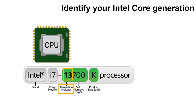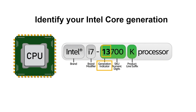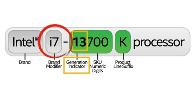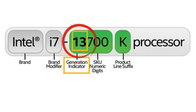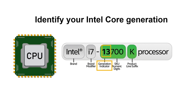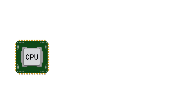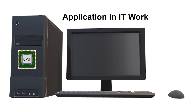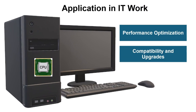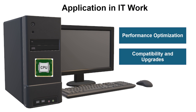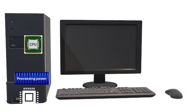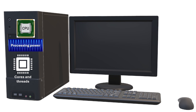You have probably seen what looks like this on your computer. Let's quickly discuss what it means so you can identify the CPU next time. The most important part is the brand modifier and the generation indicator, which will tell you if your CPU has an older or newer generation. Now that we've learned a lot about CPUs, let's talk about how it applies to IT work. Understanding the role of the CPU can help us optimize the performance of the computers we manage, and IT professionals select CPUs based on their processing power and the number of cores and threads.